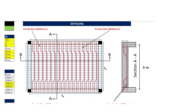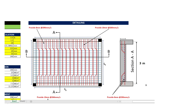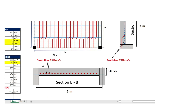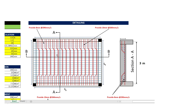Now let's have a look at the detailing part of the slab. We have provided 8 mm distribution bars at 290 mm center to center and 10 mm main bars at 260 mm center to center. This is the sectional view of the slab along the shorter span of 3 meters, and section BB is the longer span of 6 meters. The overall depth of the slab is calculated as 140 mm. We have provided alternative bent-up bars along the shorter span and distribution bars along the longer span.